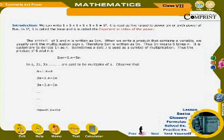Sometimes a dot is used as a symbol of multiplication. Thus, the product of 5 and n is: 5 × n = 5·n = 5n.